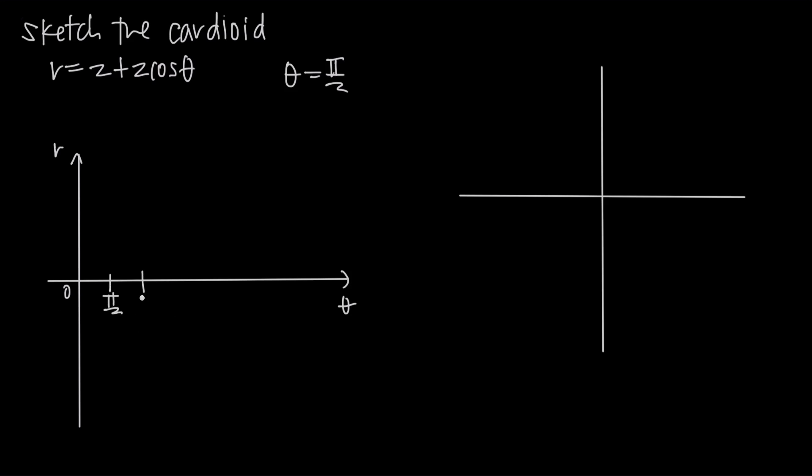2 pi over 2 is pi, 3 pi over 2, 4 pi over 2 is 2 pi, 5 pi over 2, 6 pi over 2 is 3 pi, 7 pi over 2, and we could keep going but that should be plenty.